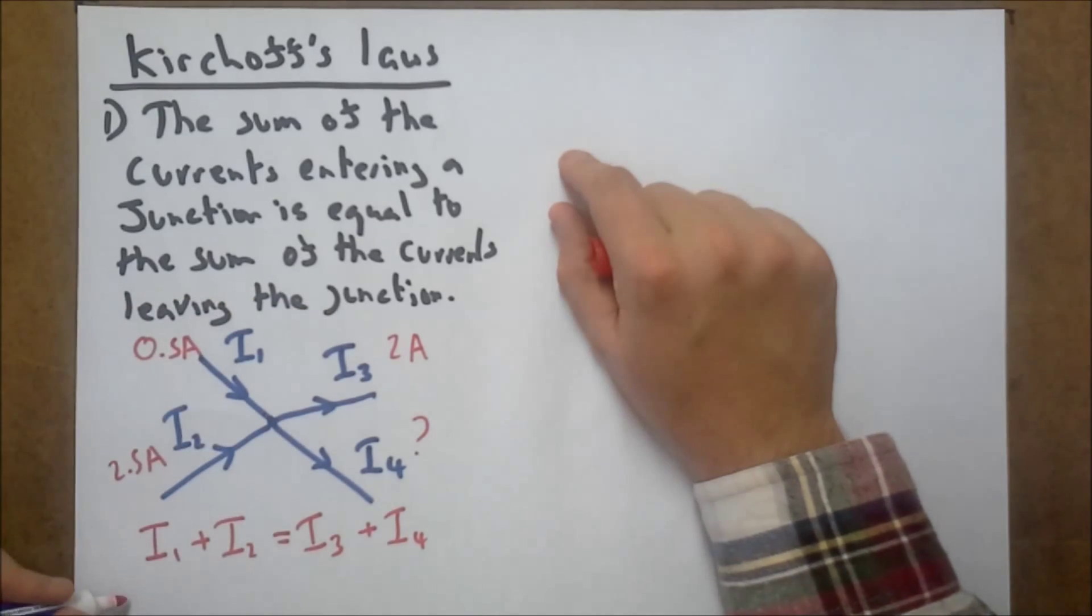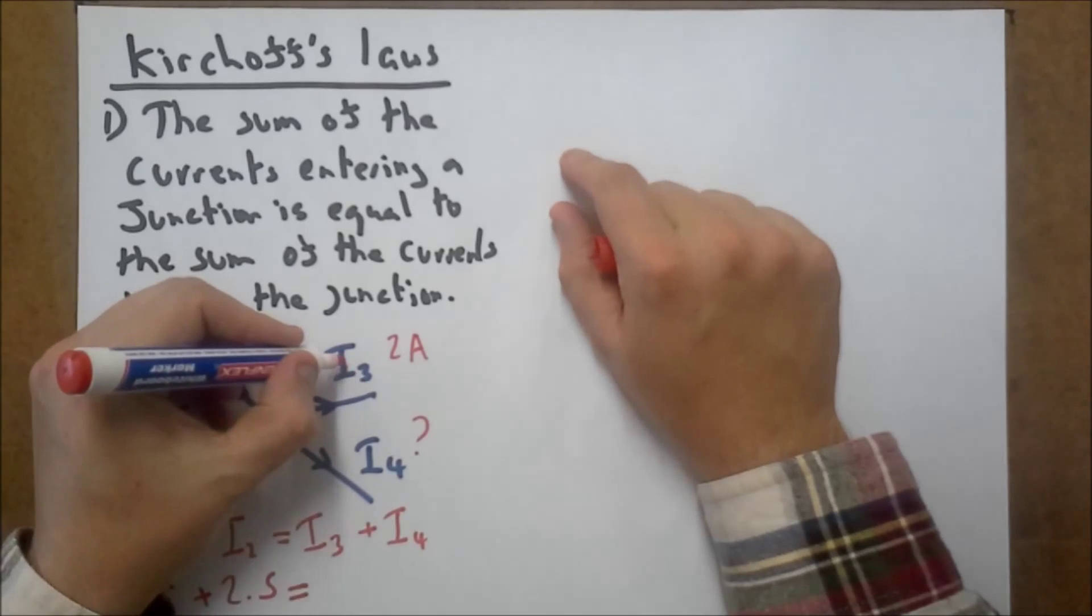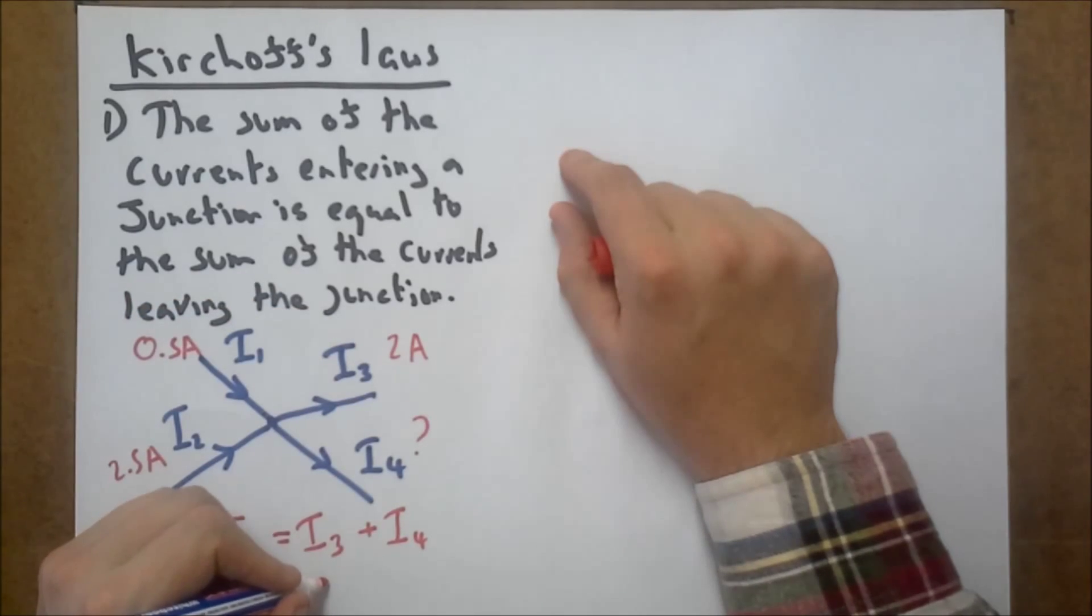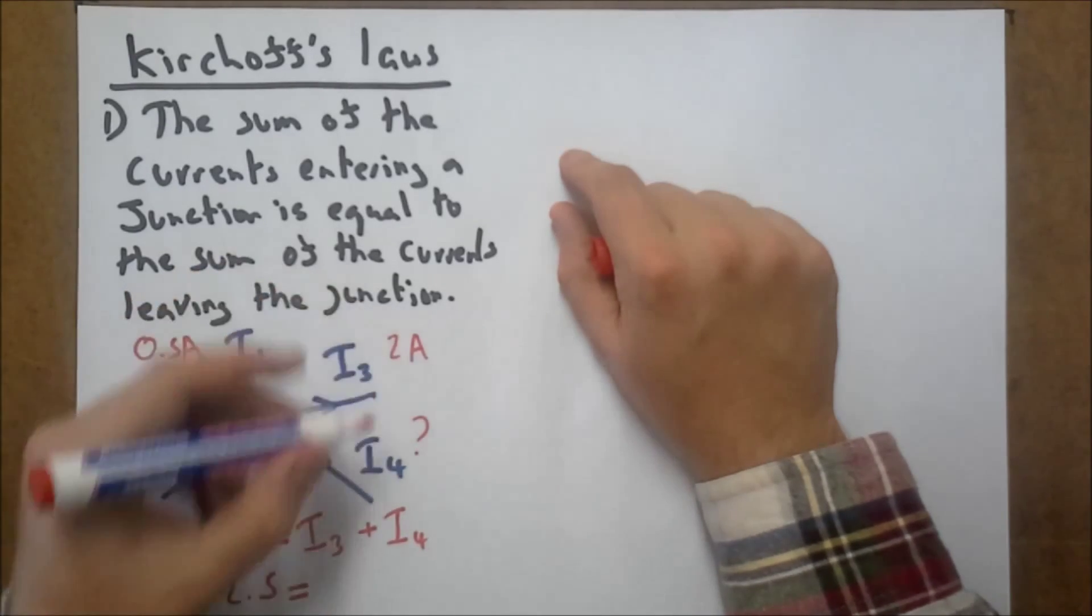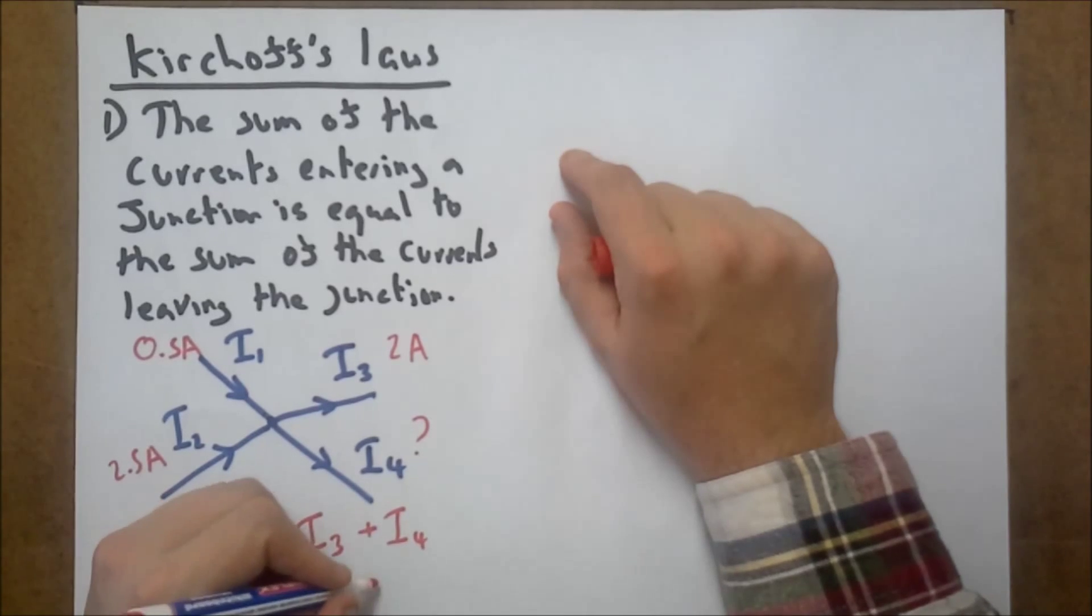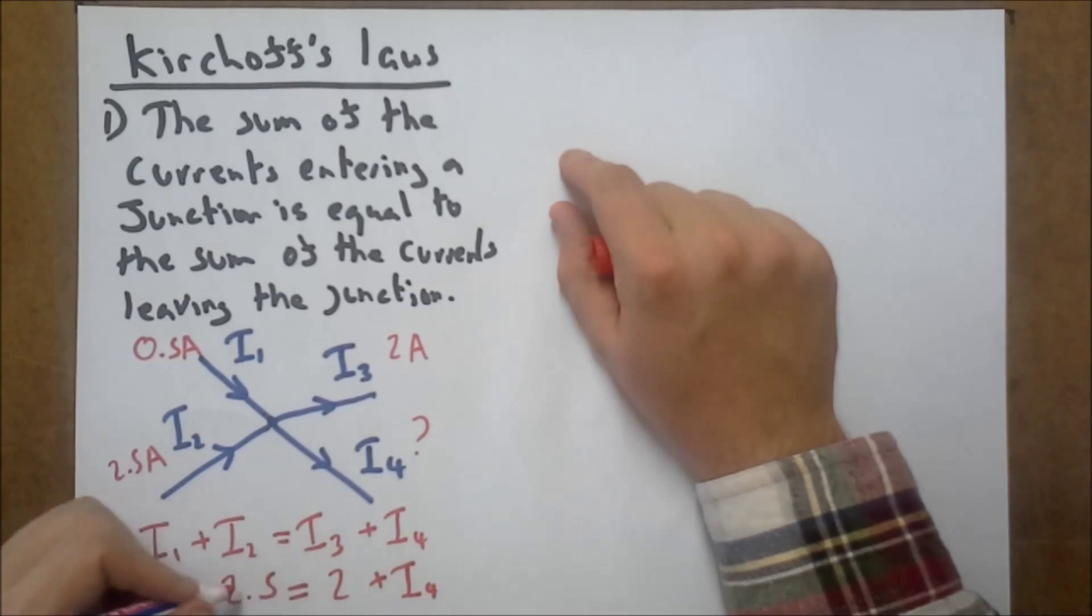I1 is 0.5 plus I2, which is 2.5, equals 3. Current I3 going out is 2 plus I4. 0.5 plus 2.5 is 3, move the 2 over, and we find that I4 must equal 1 amp.